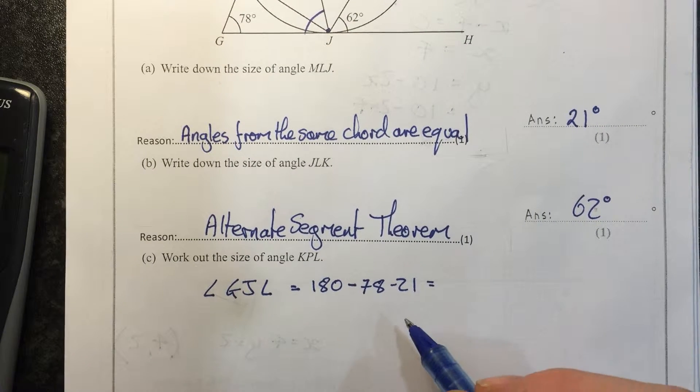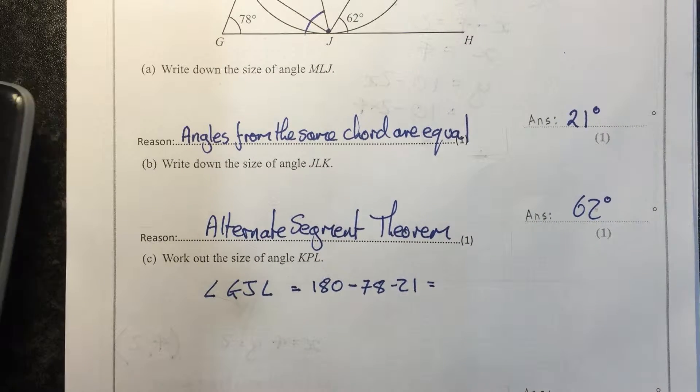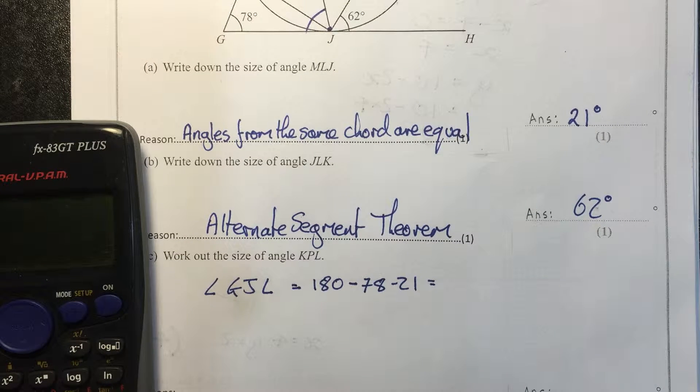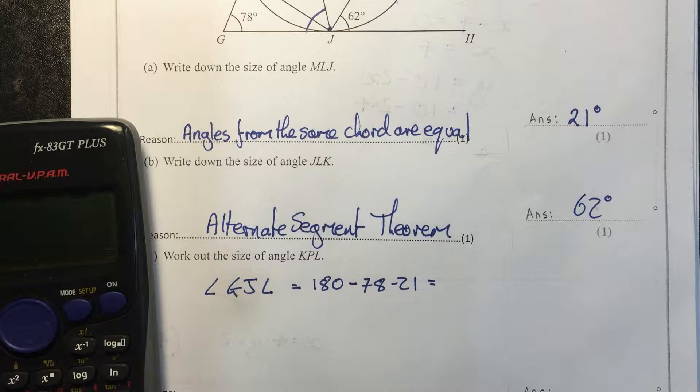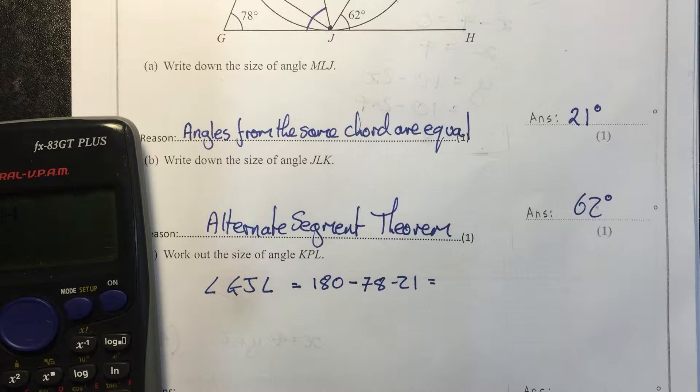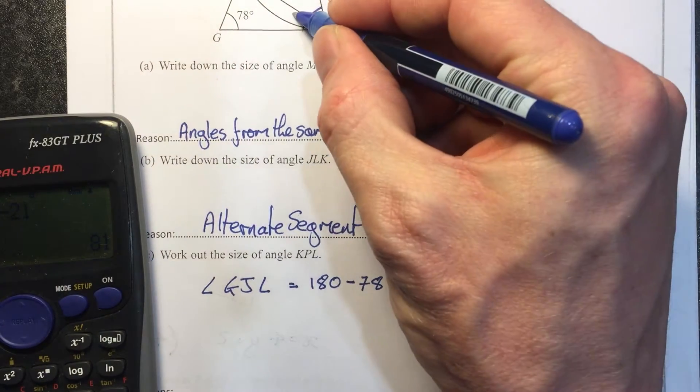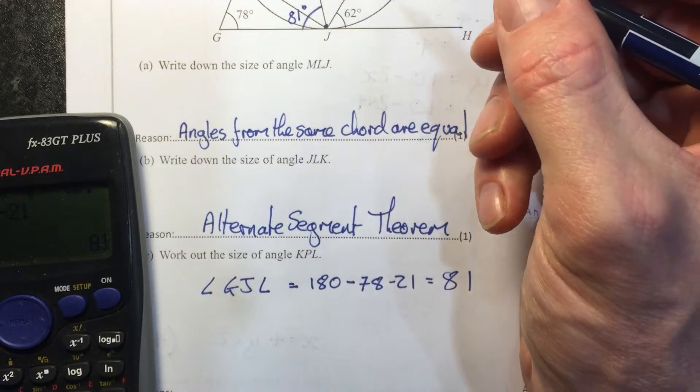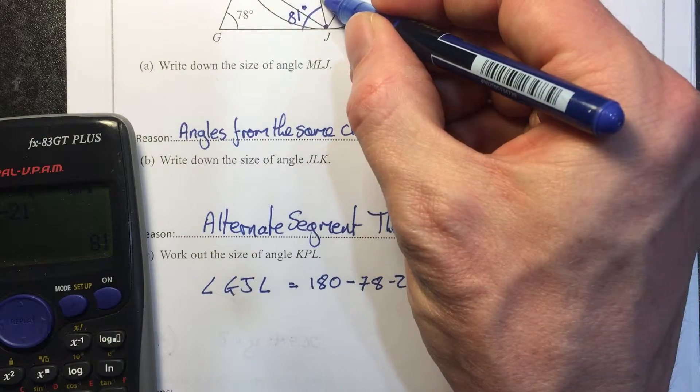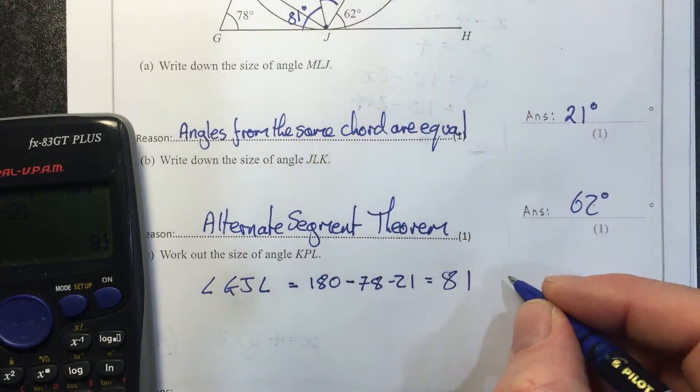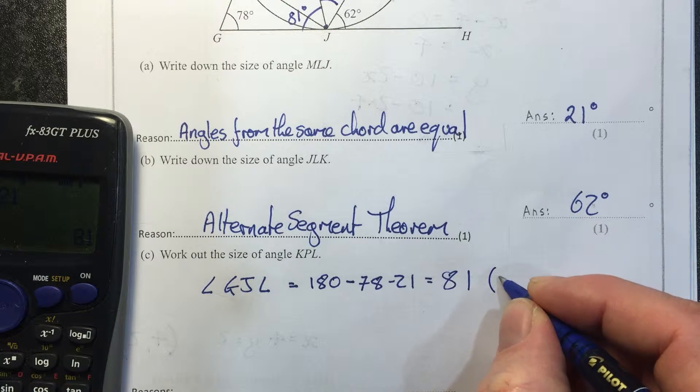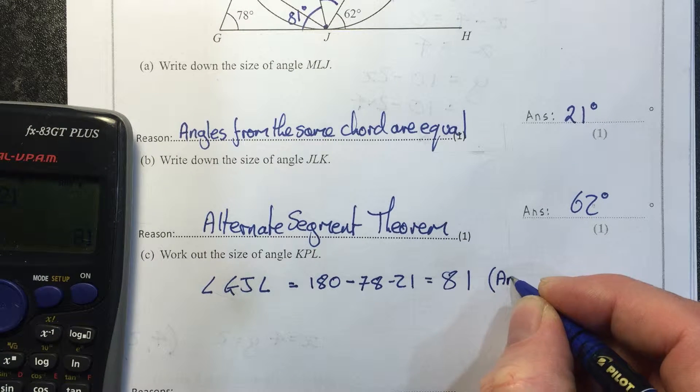All right, just to take a break there, some technical difficulties, but we're just working out that one's 81 degrees. So we've got 81 degrees in here, we can then work out that one. The reasons for that one: angles.